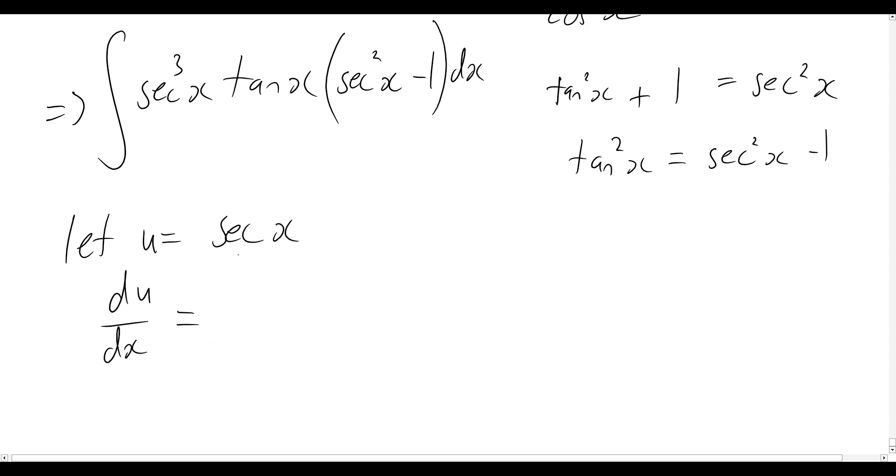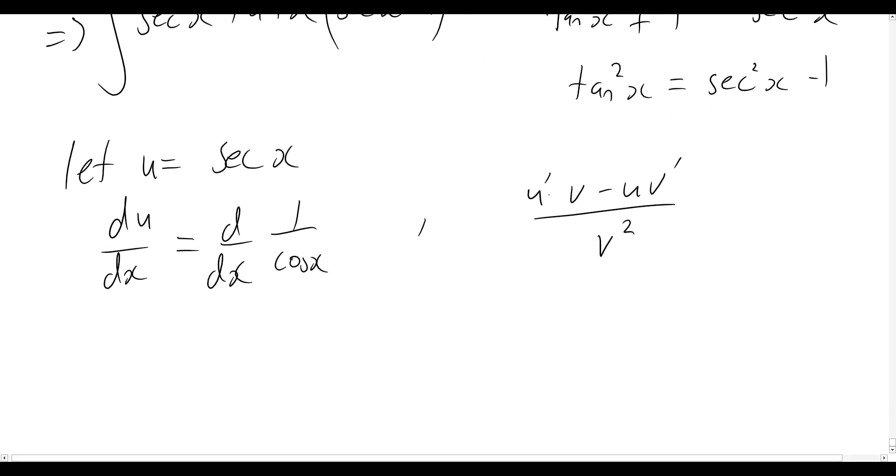So the derivative of sec of x, I might rewrite that out now as d dx as 1 over cos x. And so, hopefully you can see from this, we're actually going to need to use our quotient rule of differentiation. And just as a quick reminder, that is u prime v minus u v prime all over v squared. So u is the numerator, v is our denominator, and the primes just represent the derivatives. So what is u prime? If u is equal to 1, then u prime is going to then be equal to 0.